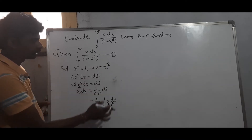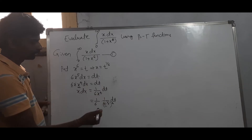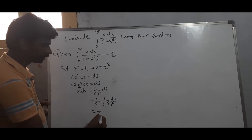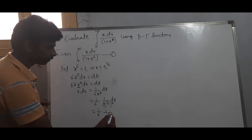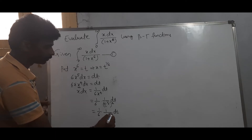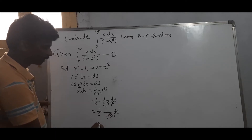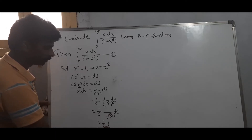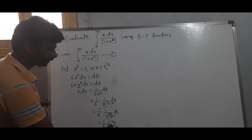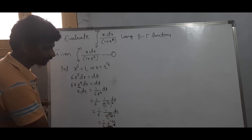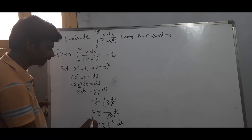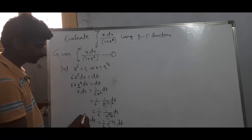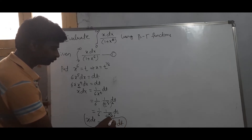Since x to the power 6 equals t, we get x equals t to the power (1/6). Therefore x to the power 4 equals t to the power (4/6). Multiplying through, x dx equals (1/6) times t to the power (minus 2/3) dt. This is our expression for x dx.